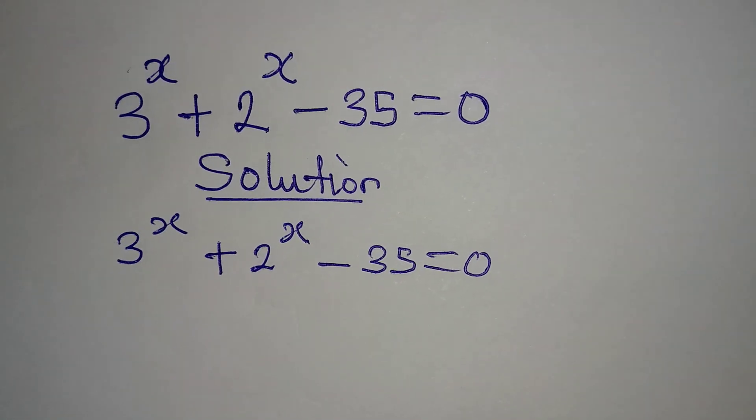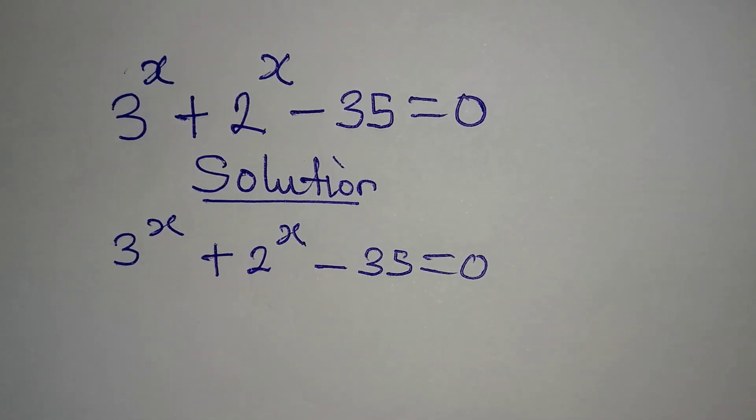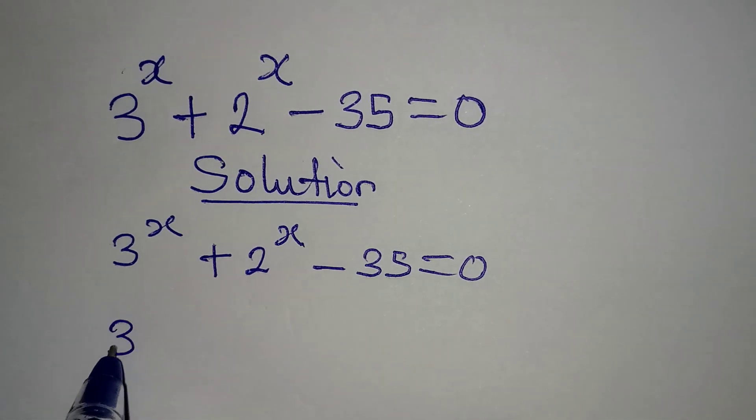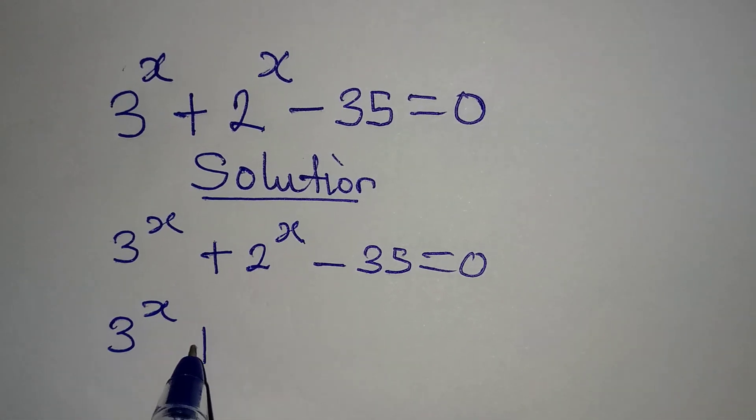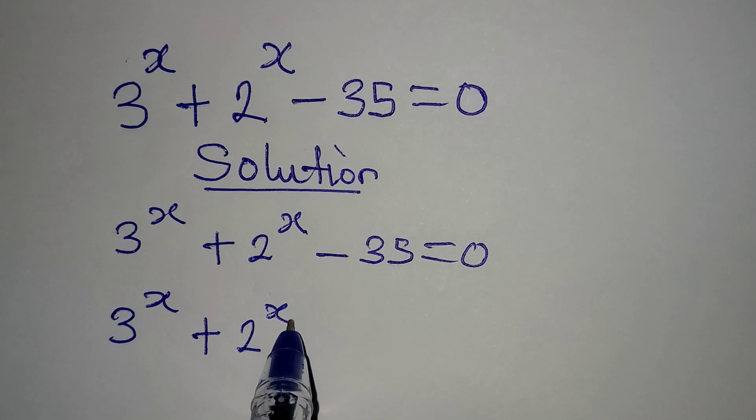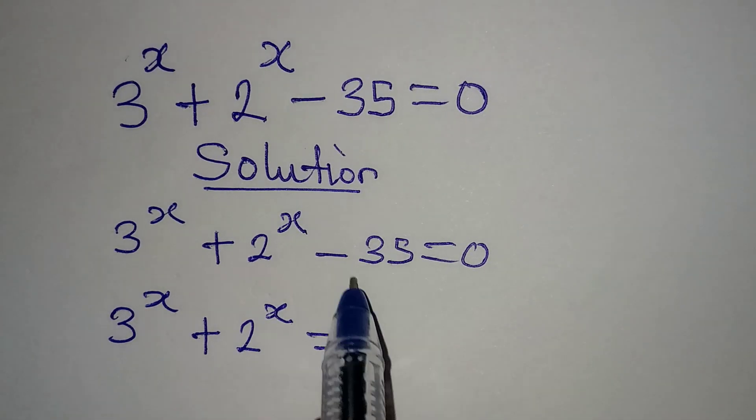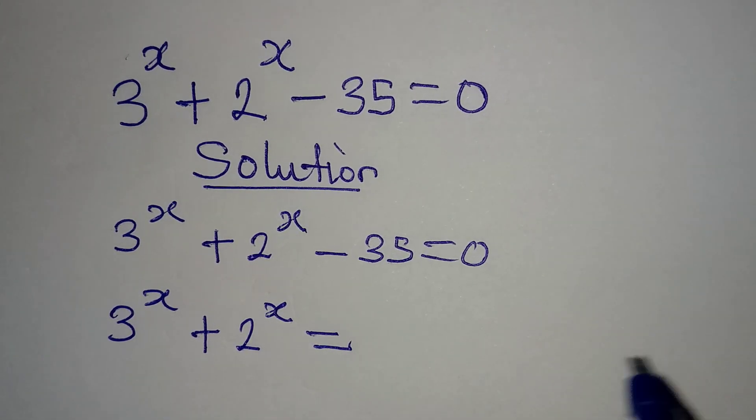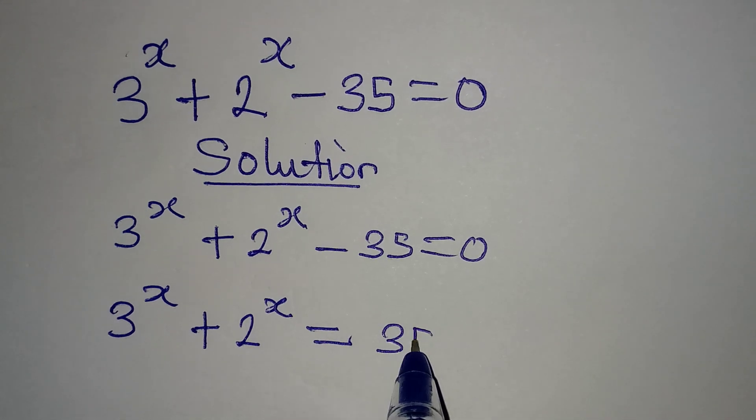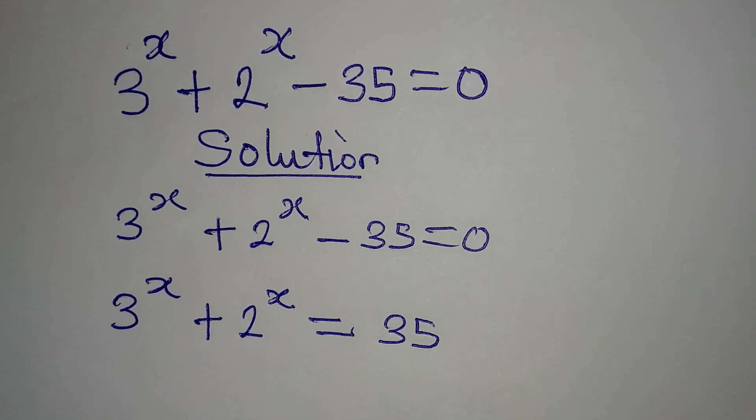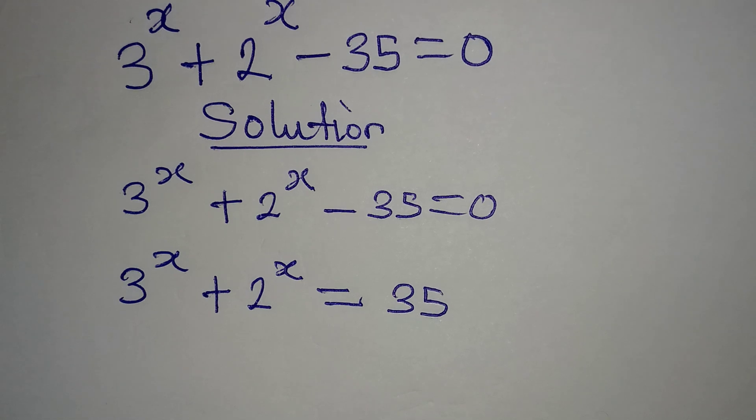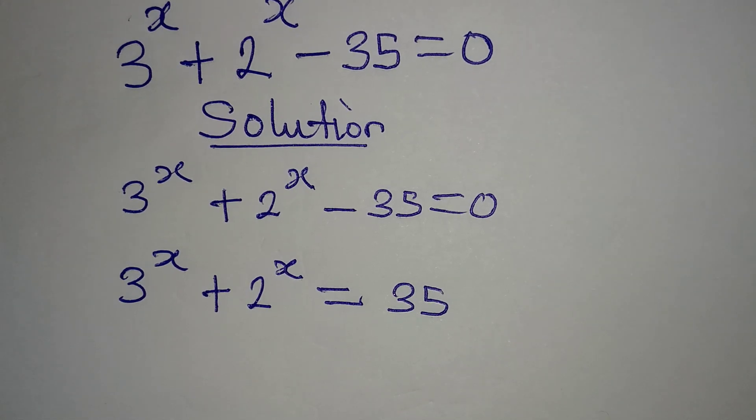We have 3^x + 2^x. What if I take this negative 35 to the right? It becomes positive 35. So 3^x + 2^x = 35. Remember, I'm still trying to get the value of x.